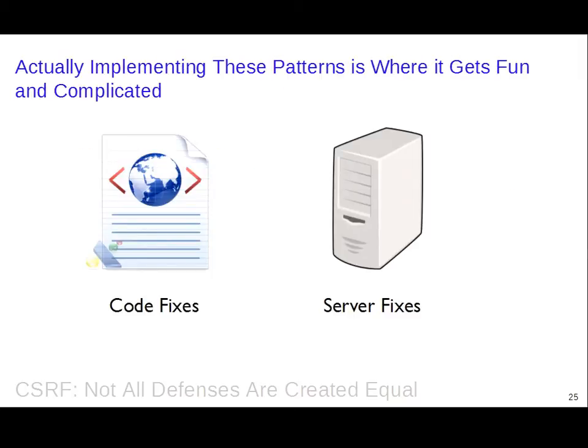Those are the four high-level options: synchronizer token pattern — make one random variable; double submit cookies — make a cookie and a random variable that must match; challenge-response — are you human?; and check the referrer header. Now let's go through specific implementations and see where they do well and where they don't.